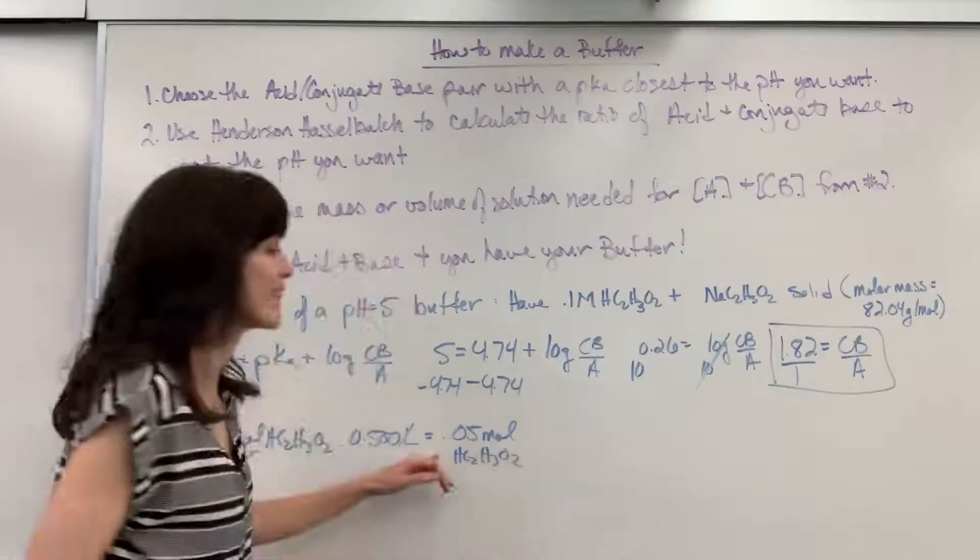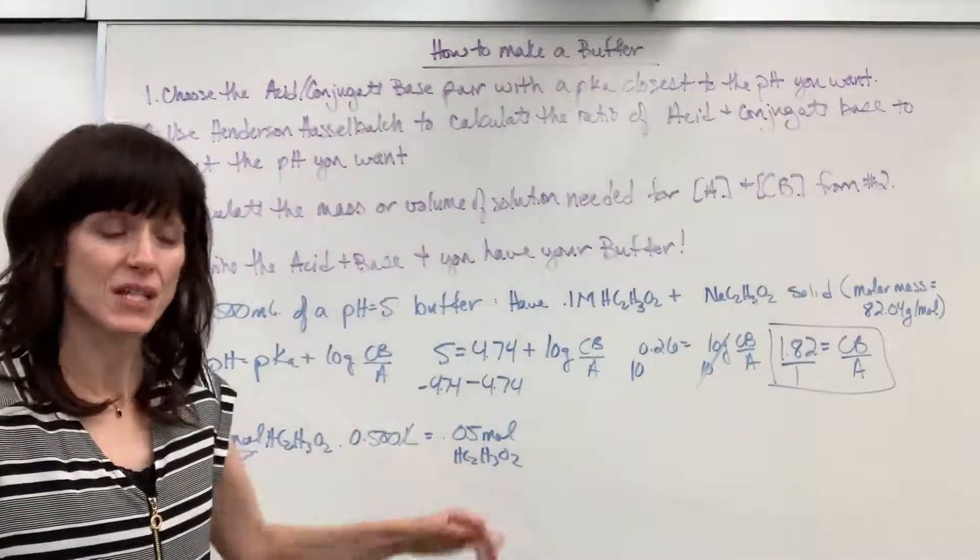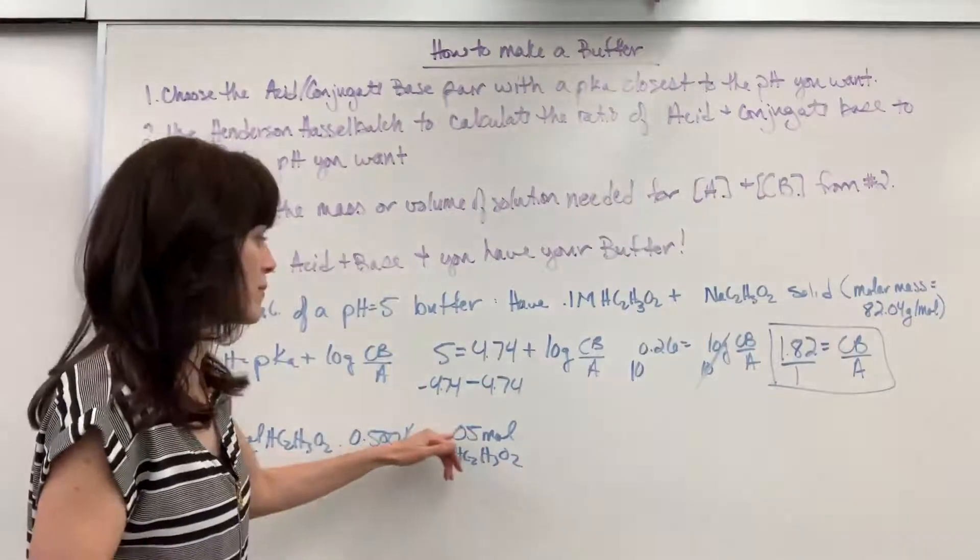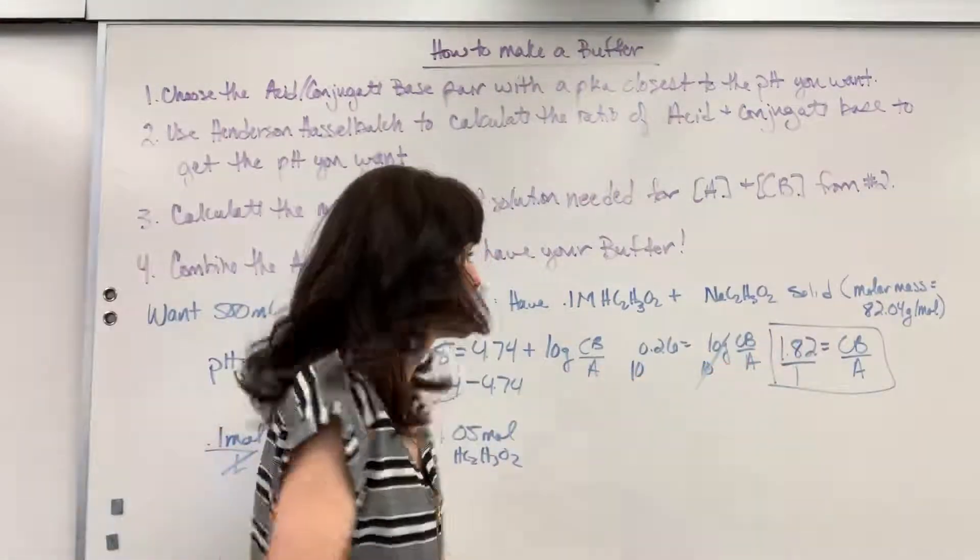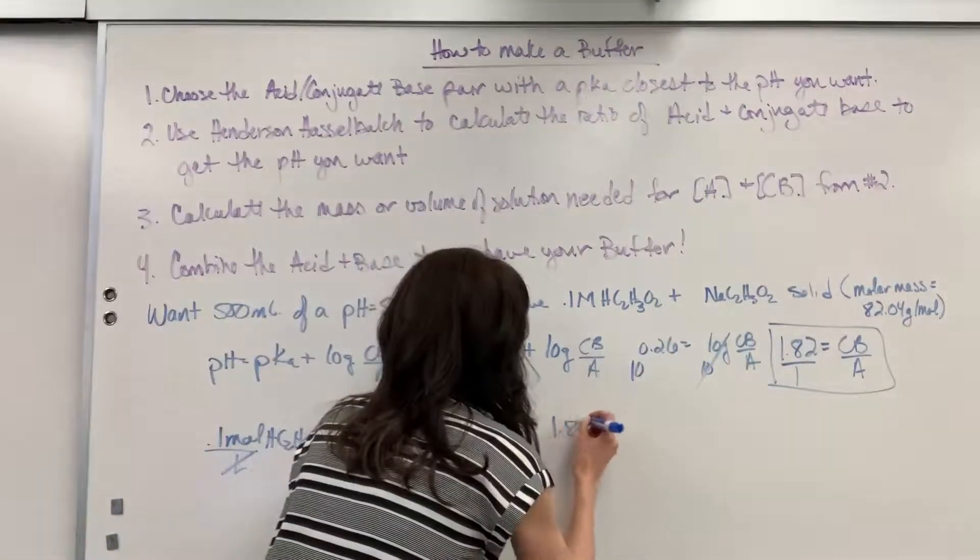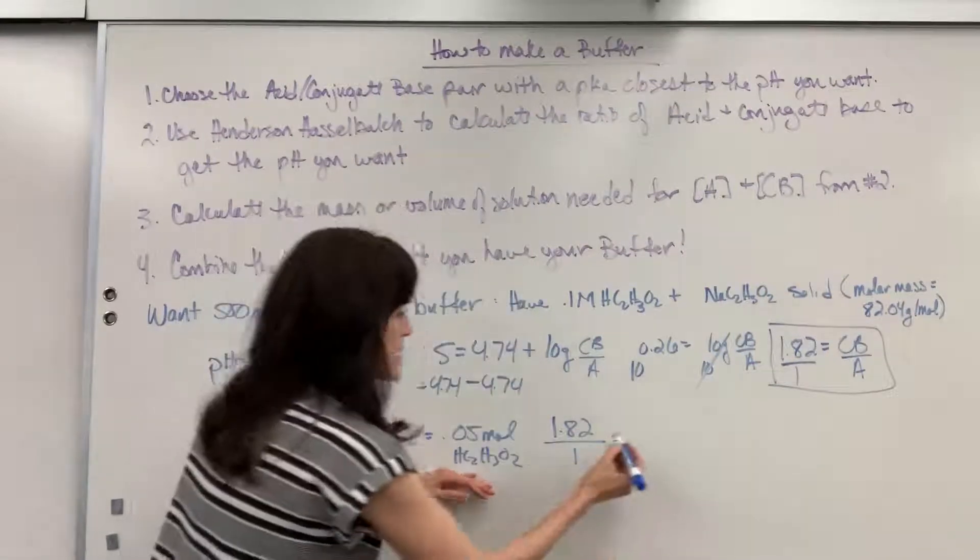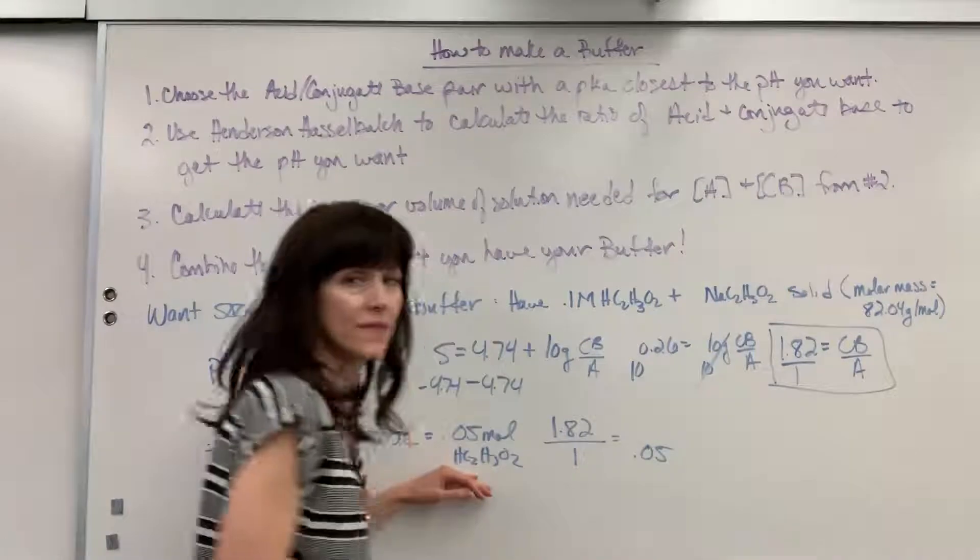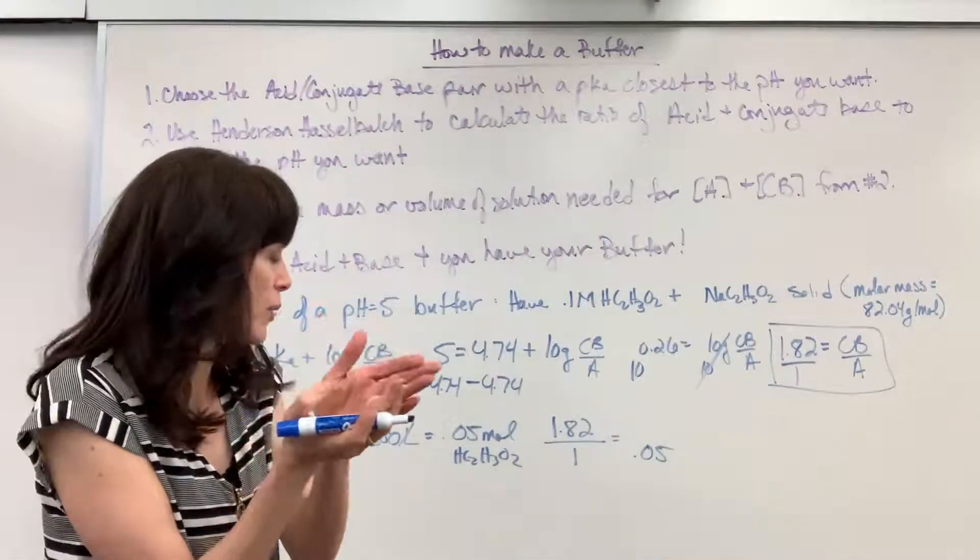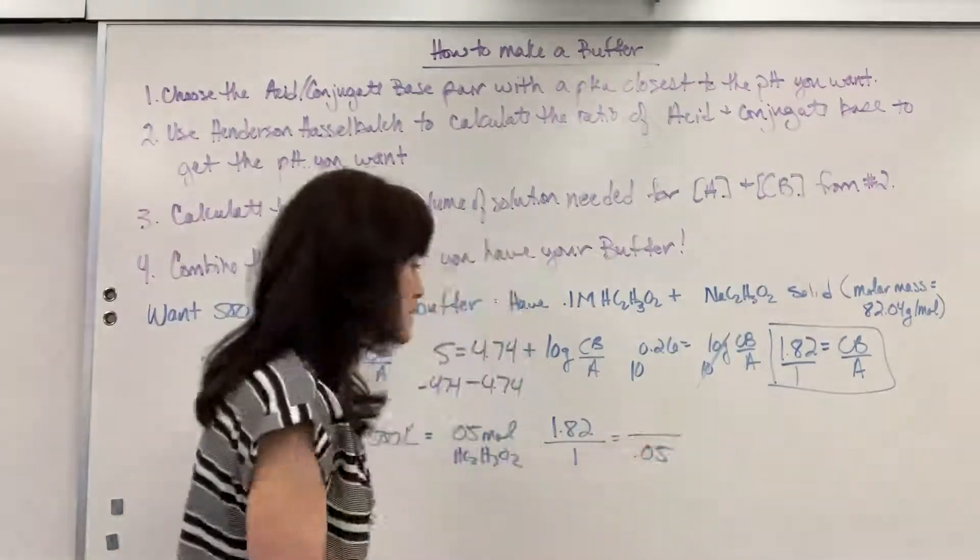and we have 0.05 moles of the acetic acid. There are my moles. So I have 500 mils of this, and there's 0.05 moles. Let's just do a ratio. 1.82 of the base for every 1. Well, my acid is 0.05. That's what I have in the beaker of 500 mils. I have 0.05. So my question is,